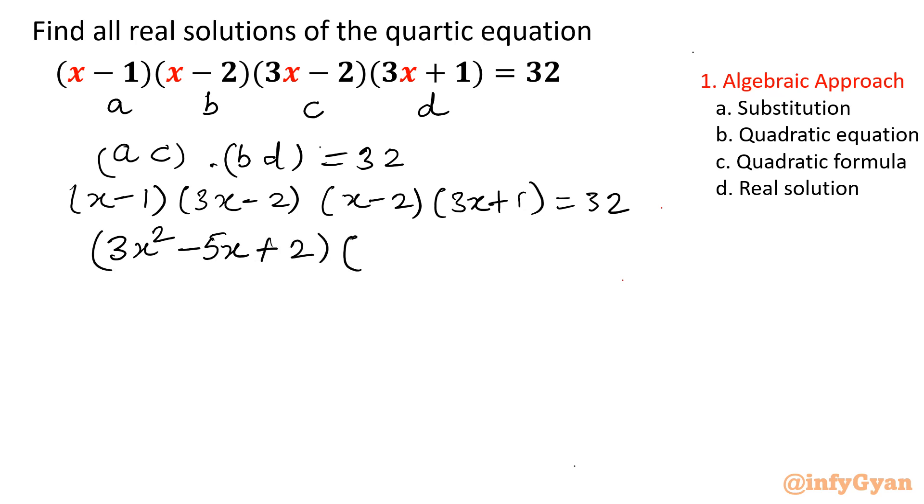Same way for the last two brackets: x times 3x is 3x², then we get minus 5x from the middle terms, and minus 2 times 1 is minus 2, equal to 32. So we have (3x² - 5x + 2)(3x² - 5x - 2) = 32.